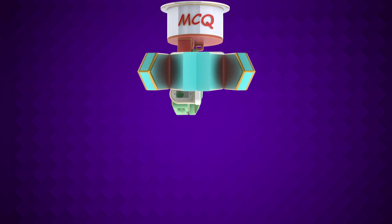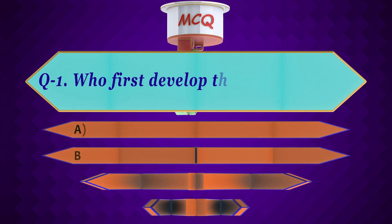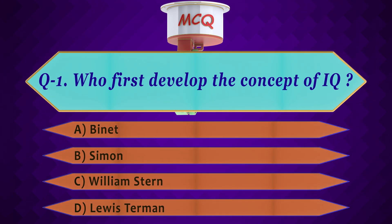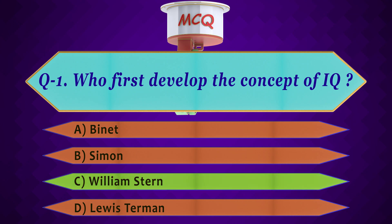Now let us solve some MCQs on this topic. Question 1: Who first developed the concept of IQ? A. Binet, B. Simon, C. William Stern, D. Lewis Terman. The answer to question number 1 is C, because it was William Stern, a Stanford University psychologist, who developed the concept of intelligence quotient in 1914 when he translated and revised the Binet-Simon intelligence scale.